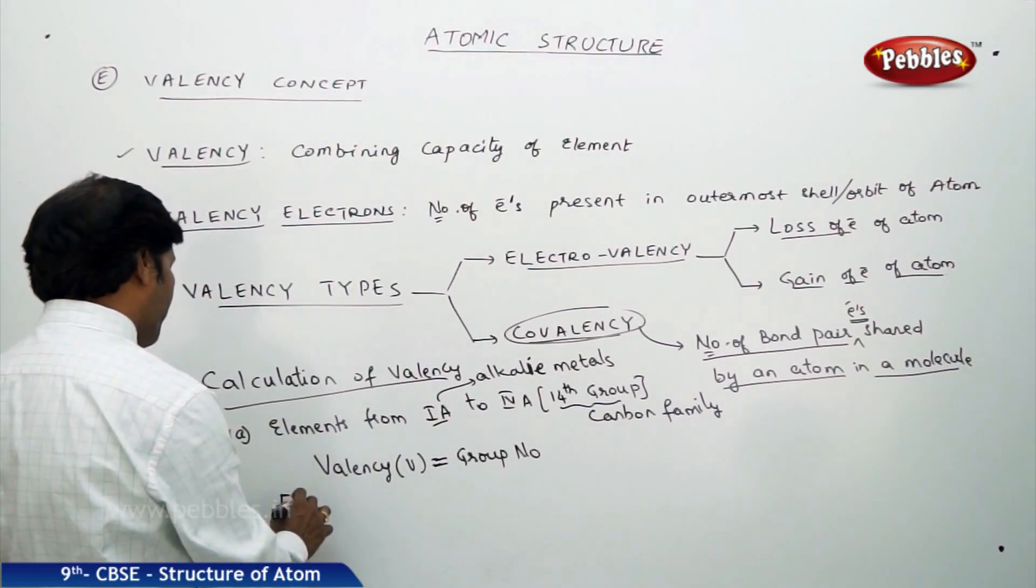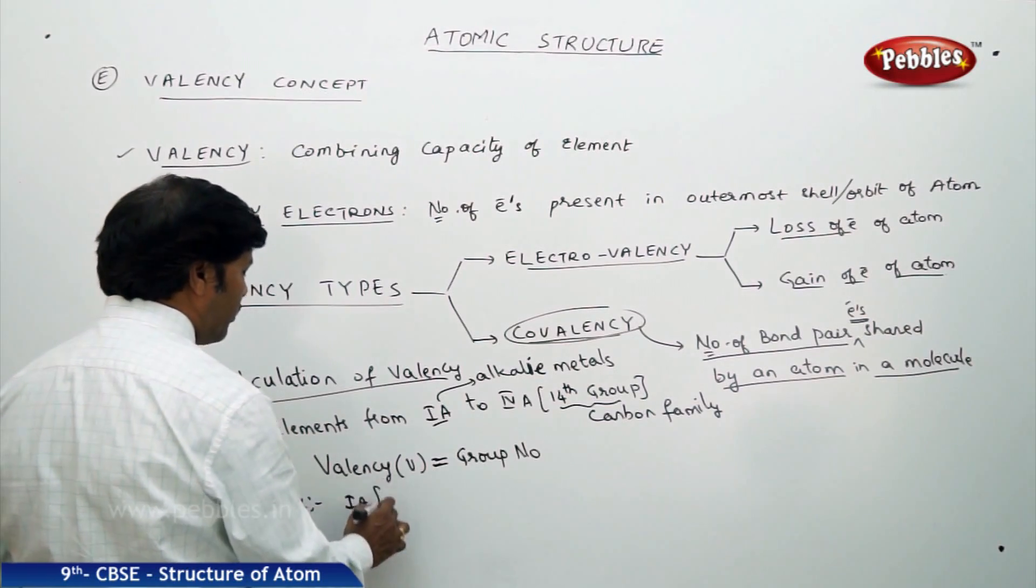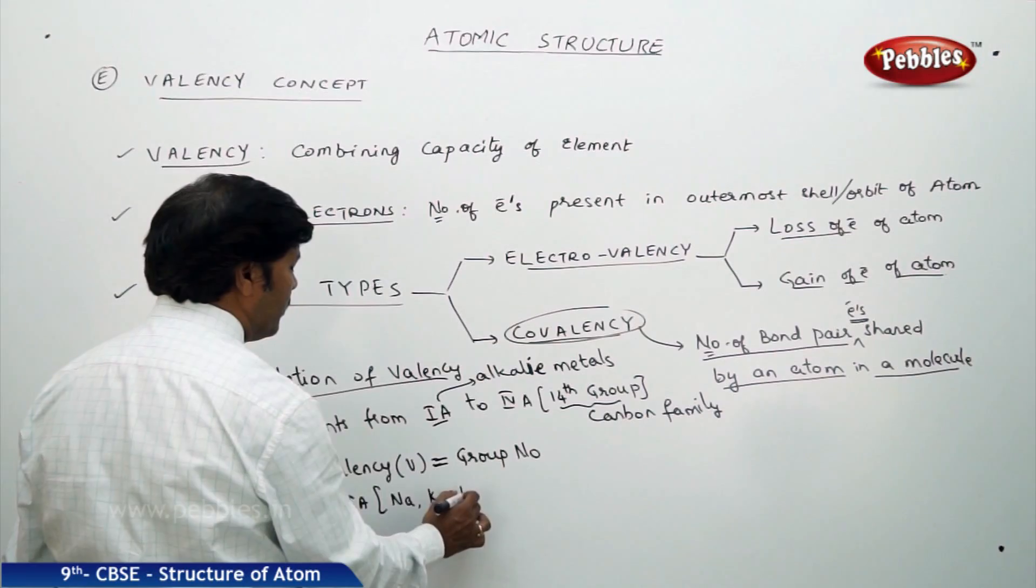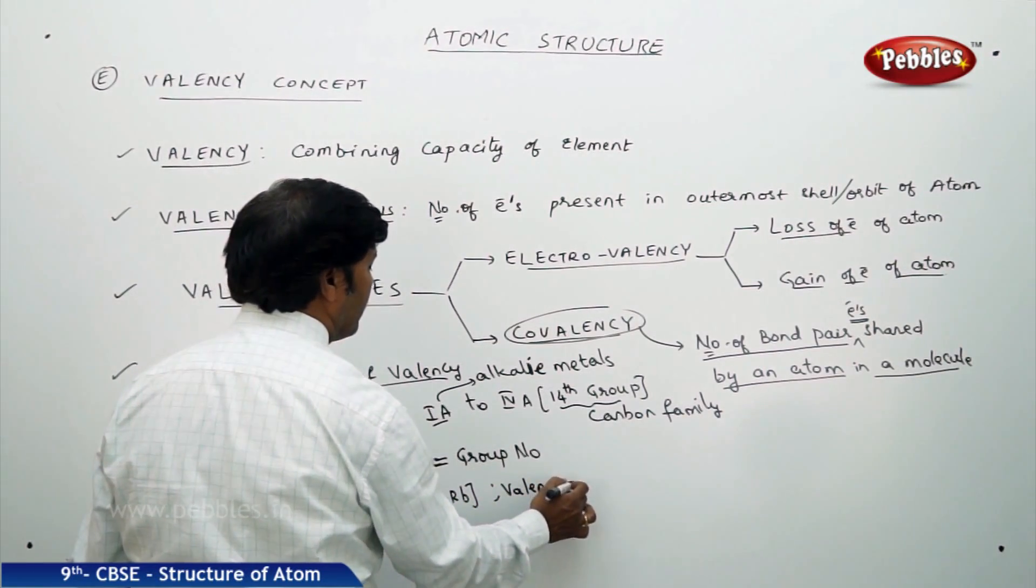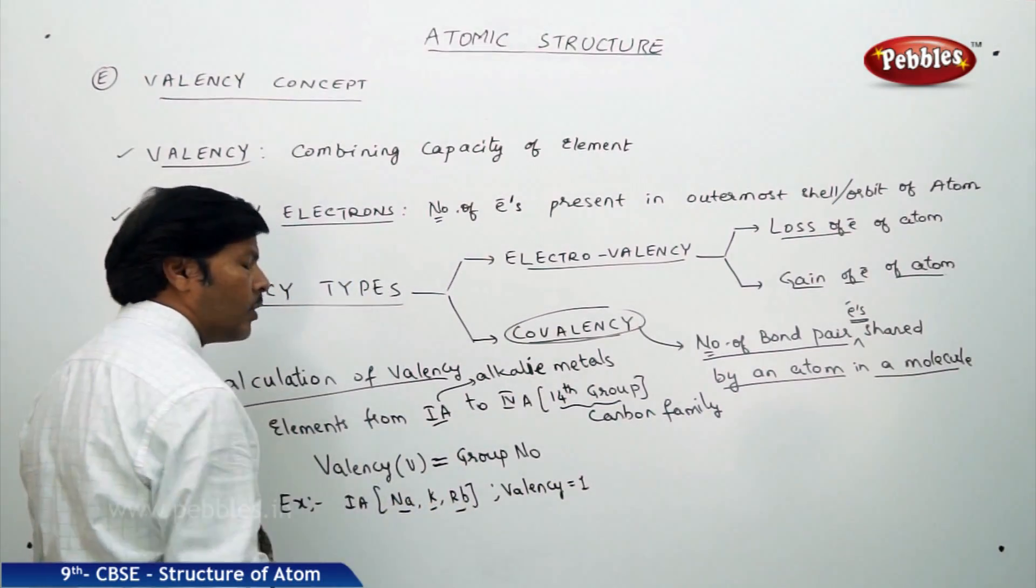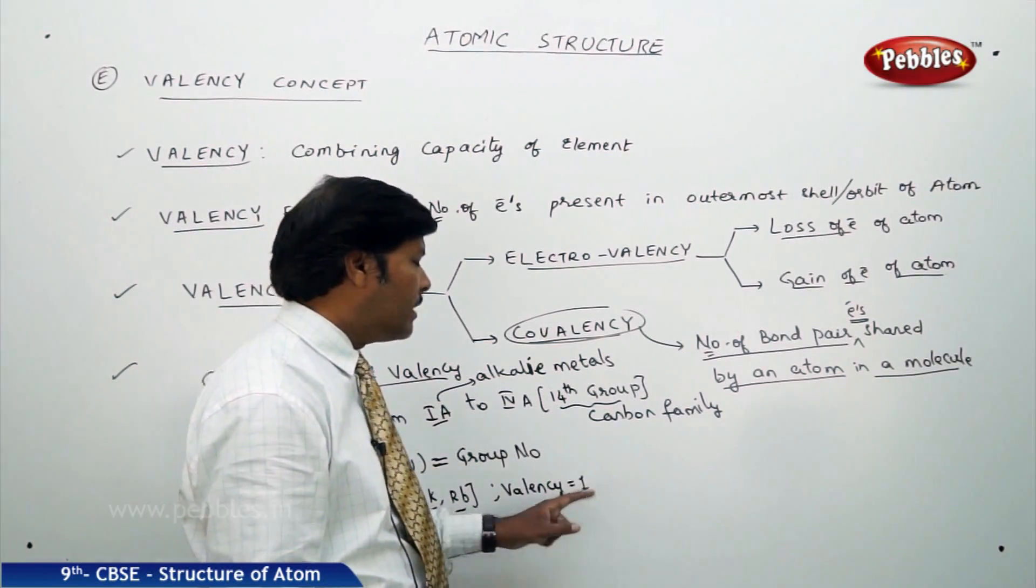For example, for 1A group you take sodium, potassium and rubidium. What is its valency? I can simply say 1. Why it is 1? Because these are all metals. They lose electrons, they can lose only 1 electron. When they are going to lose 1 electron, its valency is 1.